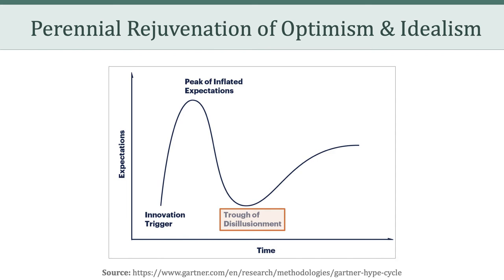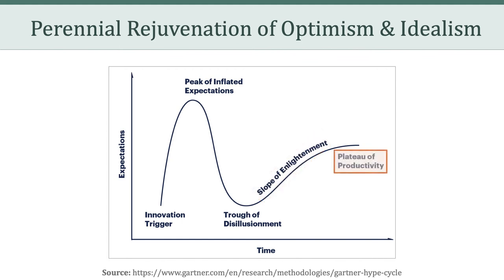Everyone becomes disillusioned — this technology is not what we thought it was going to be. From there, we have the slope of enlightenment, the fourth phase. More instances of how the technology can benefit a sector start to become obvious and widely understood. Second and third generation products appear, and more conservative companies begin to express interest. Finally, we reach the plateau of productivity — the fifth phase. Mainstream adoption takes off. Criteria for assessing viability are more clearly defined, and the technology's broad market applicability is clearly paying off. Pretty much everyone is on board and knows how to implement it to solve concrete problems.